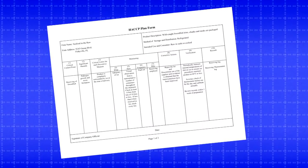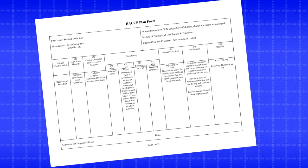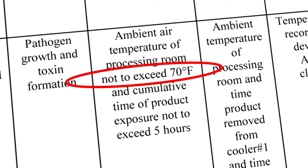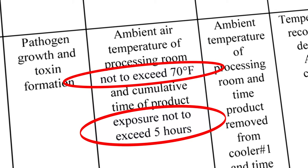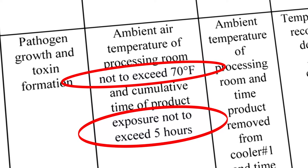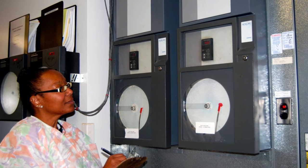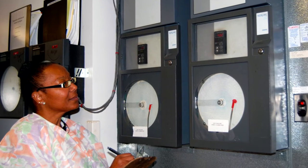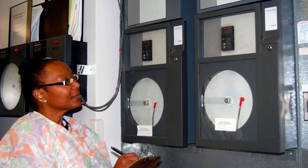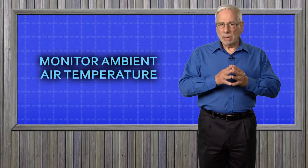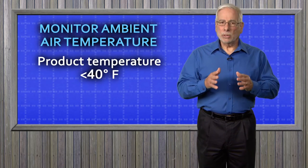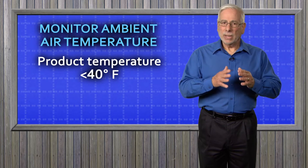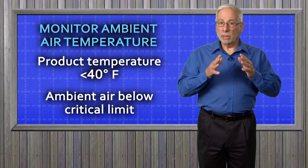Here is what this processor's unrefrigerated processing critical control point looks like in the HACCP plan when the ambient air temperature of the processing room is held below 70 degrees. The critical limits are five hours when the internal product temperatures are between 50 and 70 degrees Fahrenheit. This processor uses a continuous temperature recording device to monitor the ambient air temperature of the processing room, checks the recorded data twice per day, and manually records the processing start and finish time using a clock. Monitoring the ambient temperature is acceptable because the product temperature is below 40 degrees when unrefrigerated processing begins and the ambient air temperature is below the 70 degree critical limit.